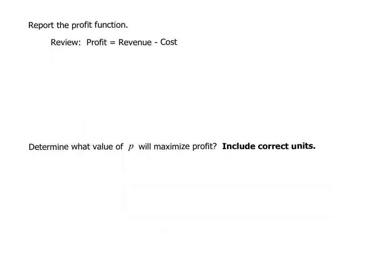The next thing they ask us to do is report the profit function. Remember profit equals revenue minus cost. We know from earlier parts that our revenue equals negative 2P squared plus 300P and our cost is negative 80P plus 13,000.